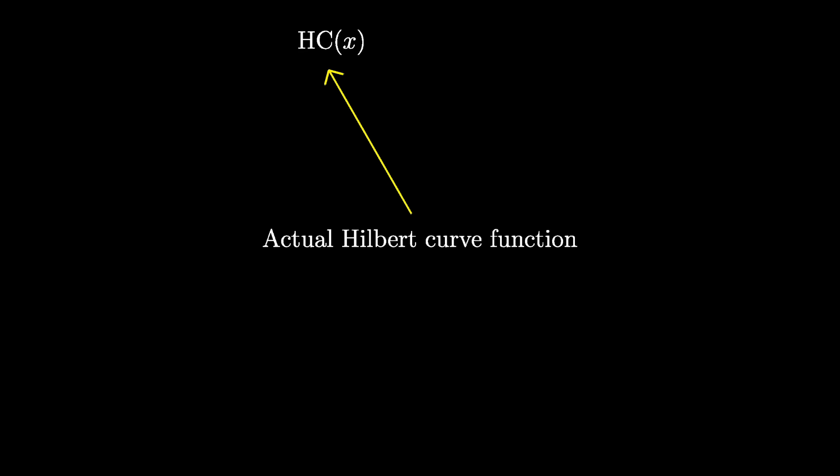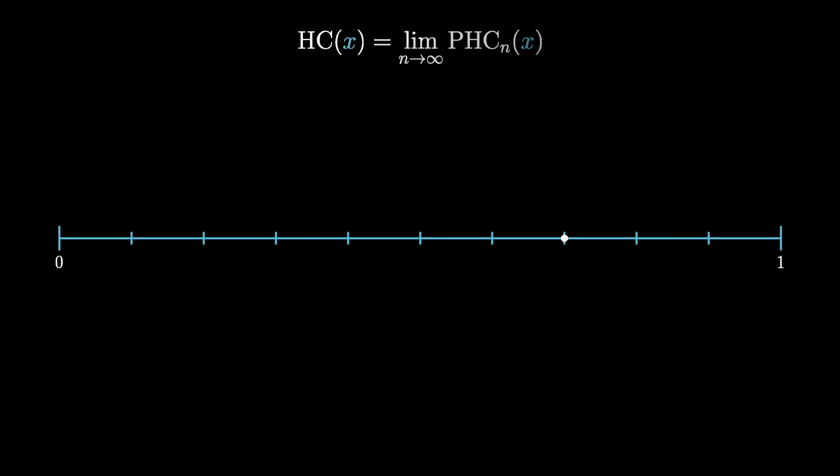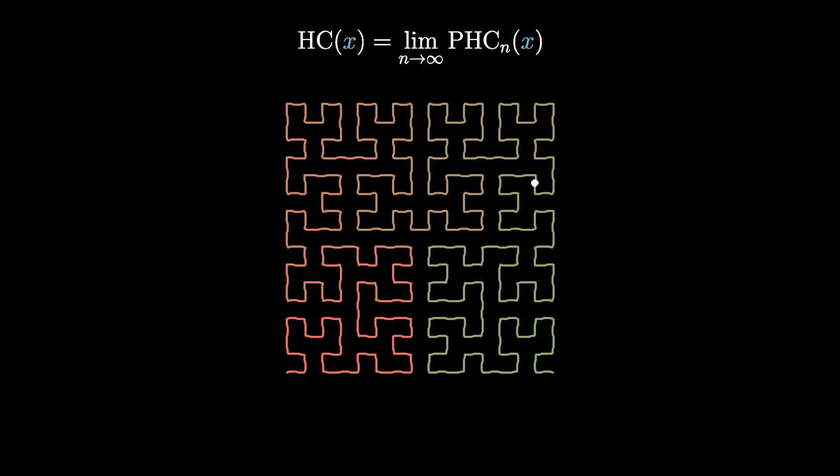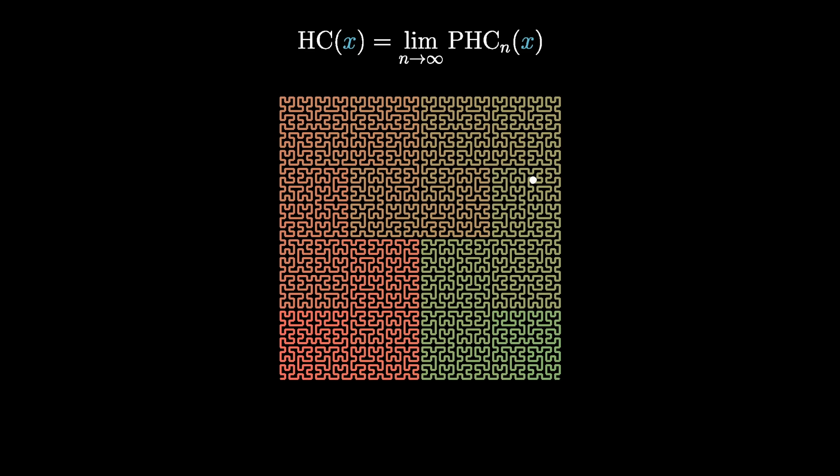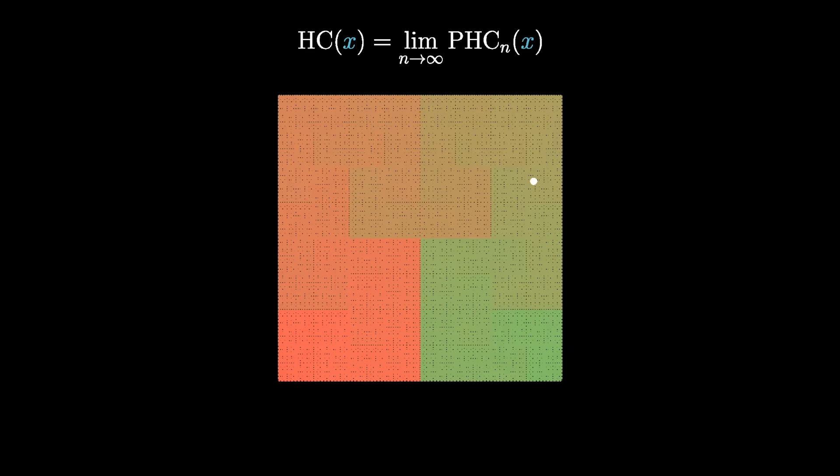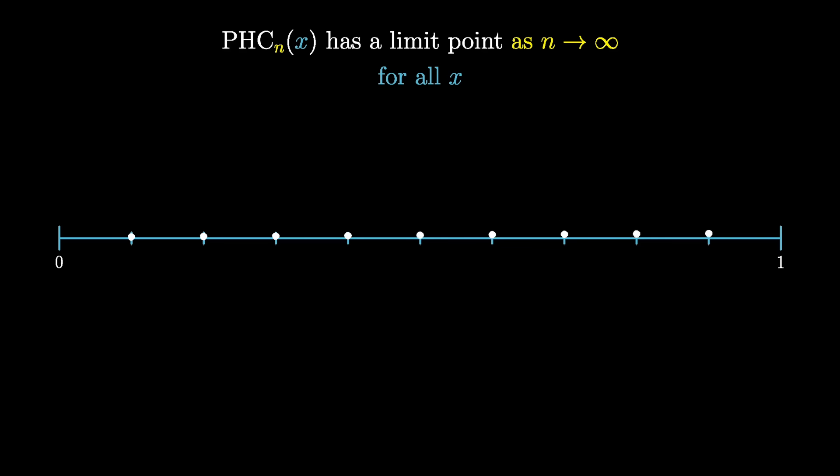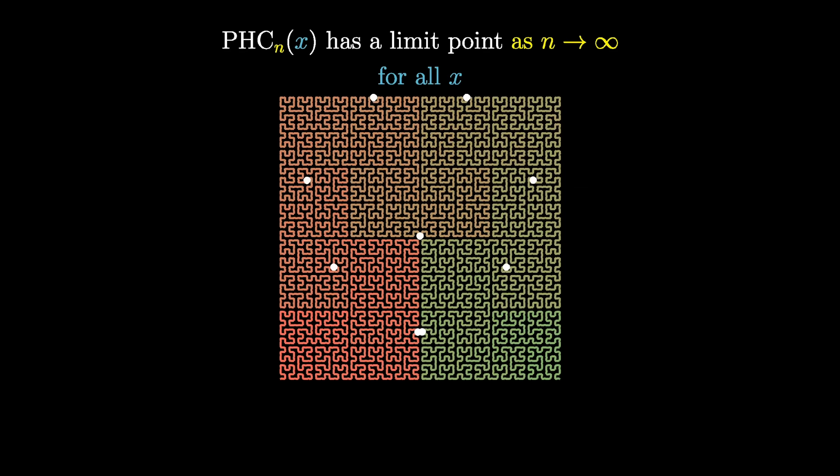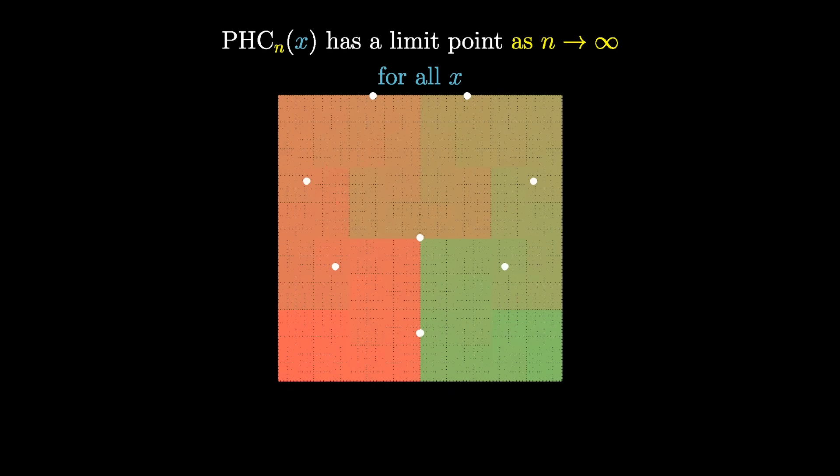Because of this property, we can define a Hilbert curve function like this. For a given input value between 0 and 1, consider the sequence of points in 2D space you get by applying each successive pseudo-Hilbert curve function at that point. The output of the Hilbert curve function, evaluated on this input, is just defined to be the limit of those points. Because the sequence of pseudo-Hilbert curve outputs always converges no matter what input you start with, this is actually a well-defined function in a way that it never could have been had we used snake curves.